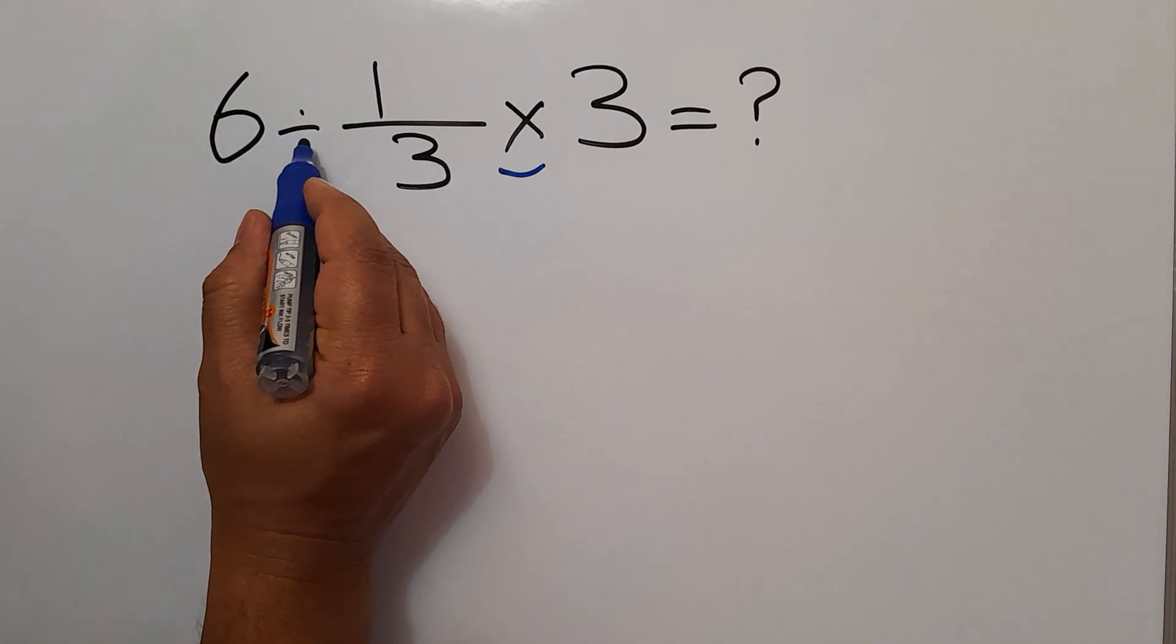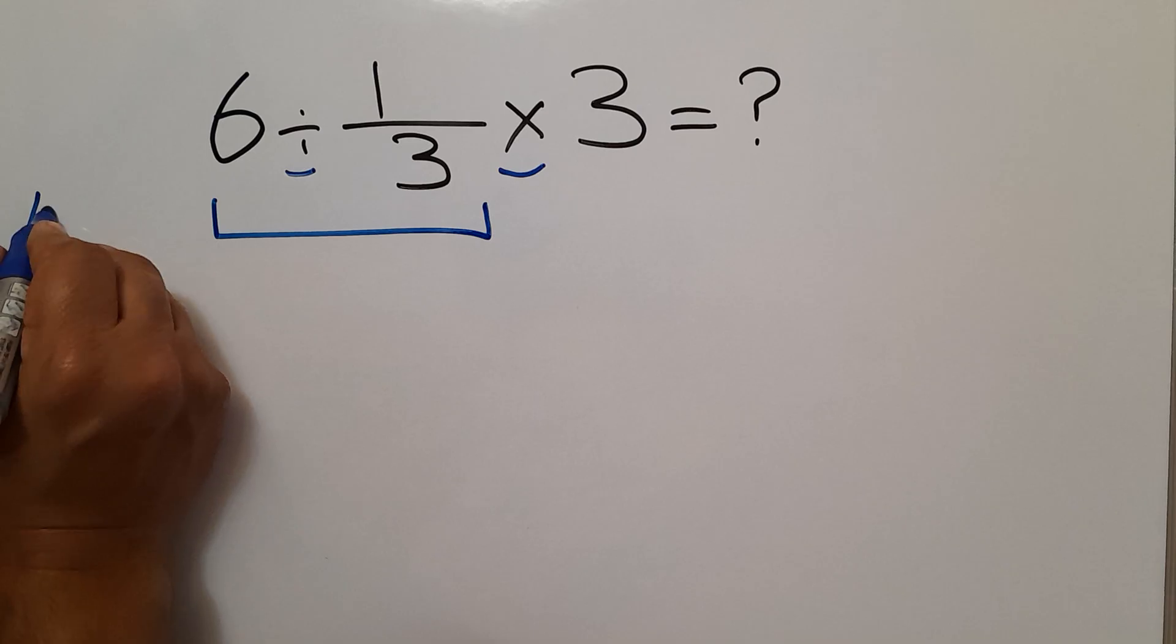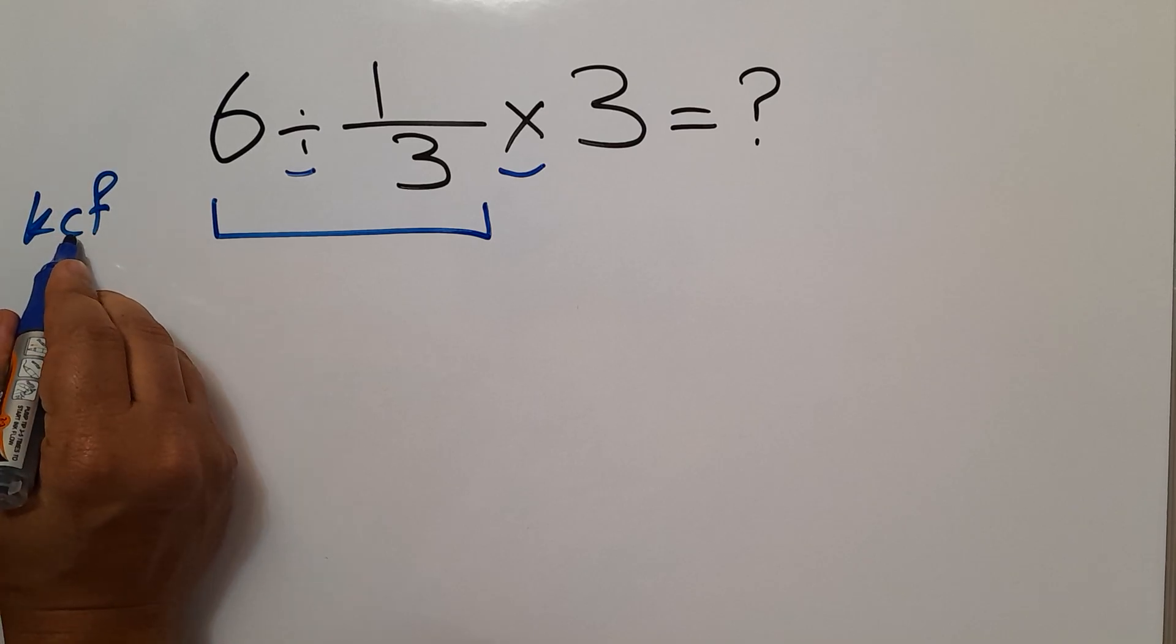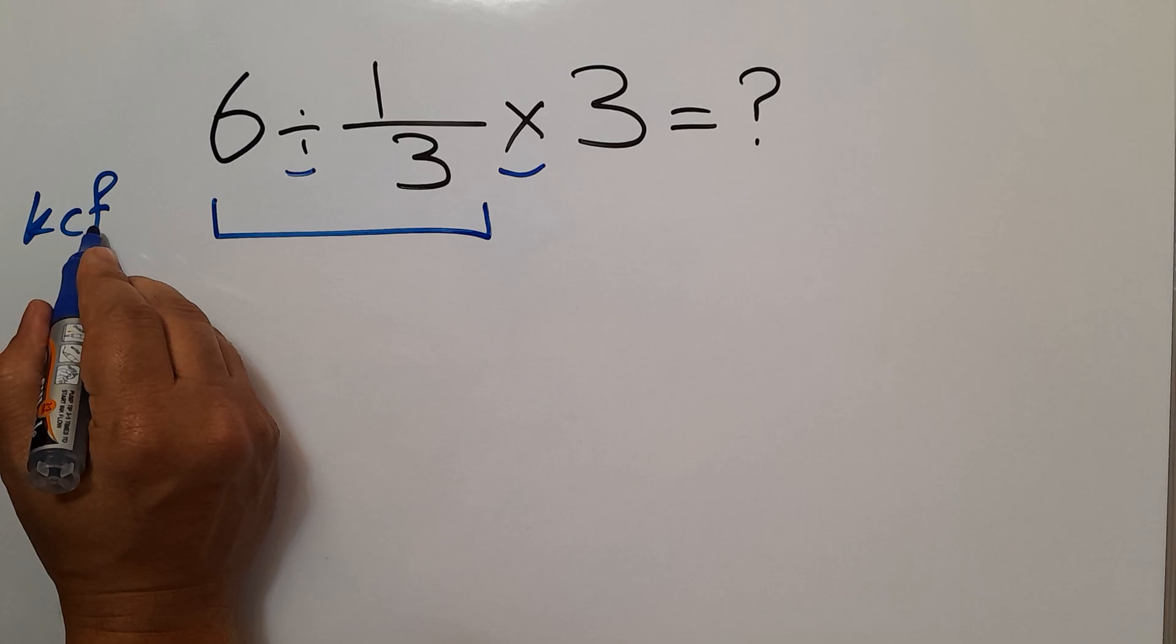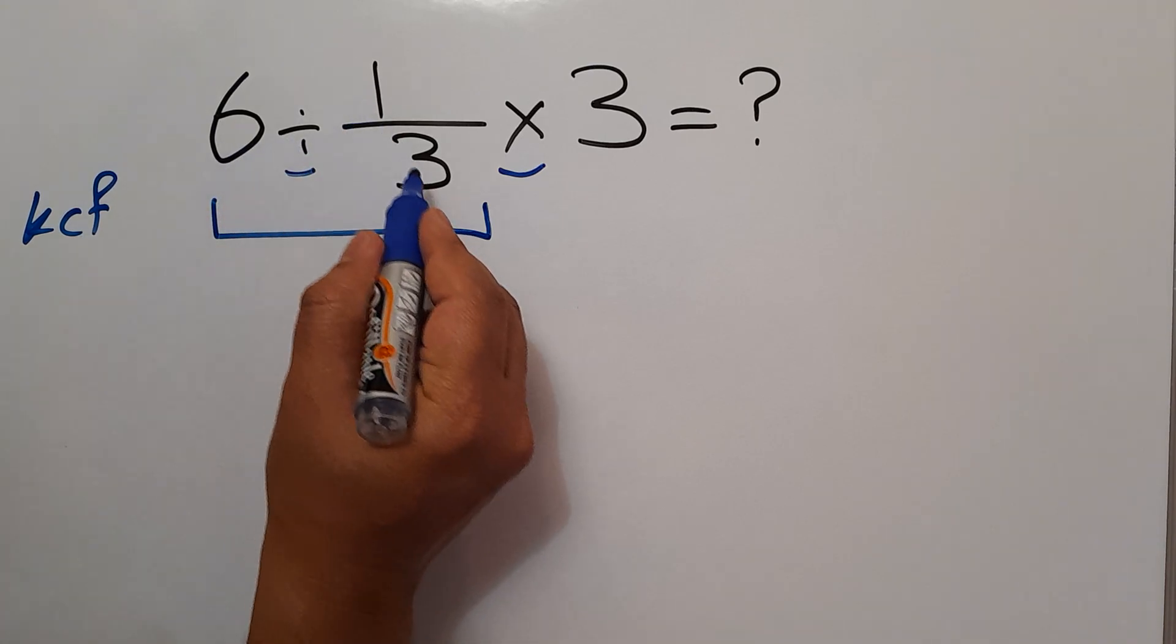6 divided by 1 over 3. According to the KCF rule, K stands for keep, C stands for change, and F stands for flip. 6 divided by 1 over 3.